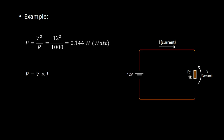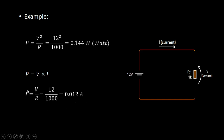We can also use another formula for calculation of power using the current. As we don't have the current value, we use Ohm's law: the current equals the voltage across the resistor — which is 12 volts — divided by the resistor value of 1 kilo ohm. The current value is 0.012 ampere. Now we can calculate the power: power equals voltage multiplied by current, which is equal to 0.144 watts.